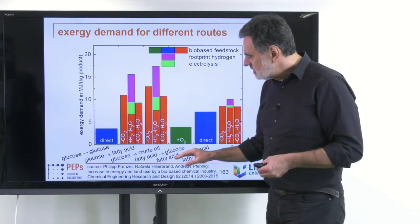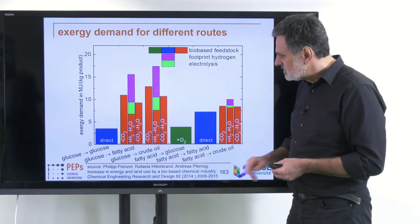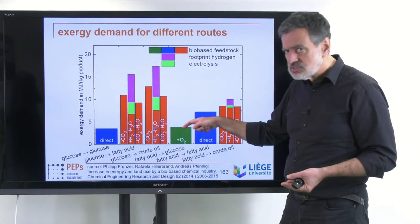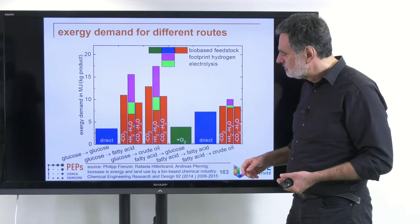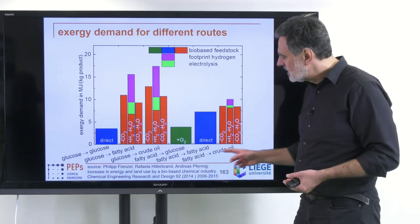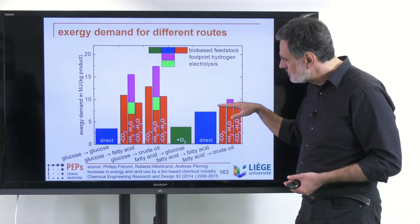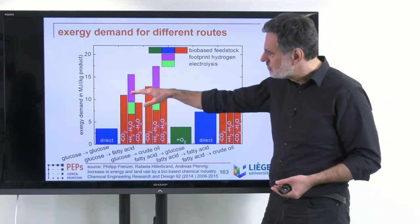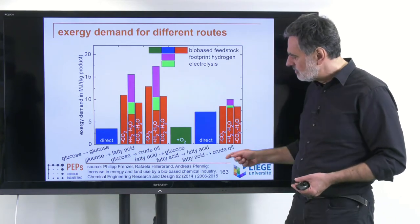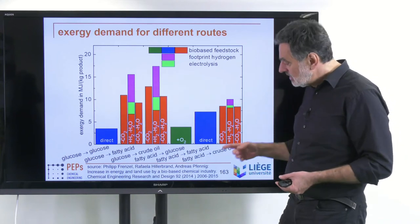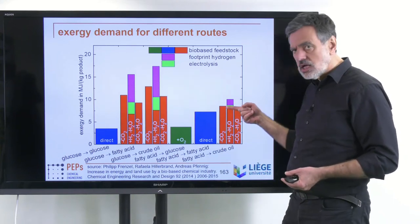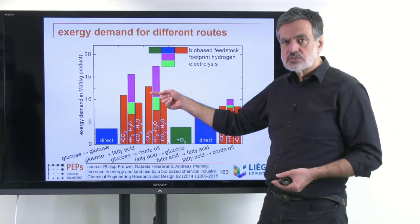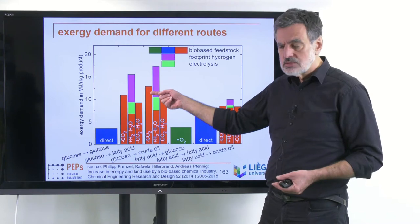From the fatty acid starting point, we can go to higher oxygen by adding more oxygen, which causes mass to increase, or go from fatty acid to the crude oil level — which is better than going from glucose to the crude oil level. So if you want a product at the crude oil level, it is beneficial to use plant oil-based processes rather than glucose-based processes.